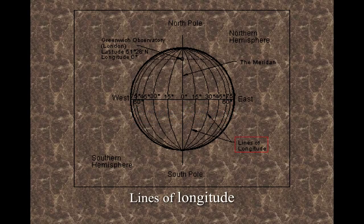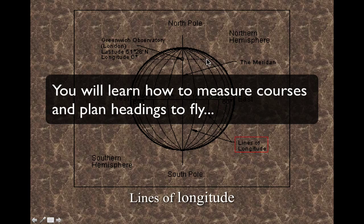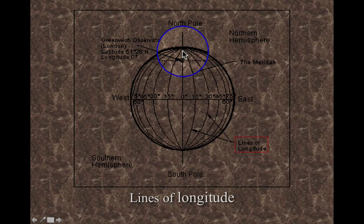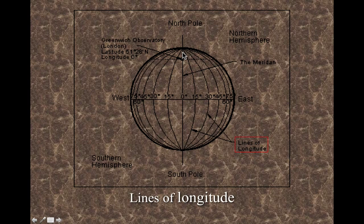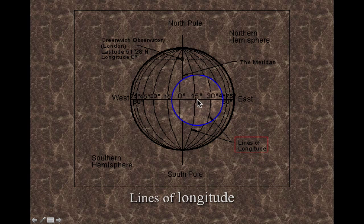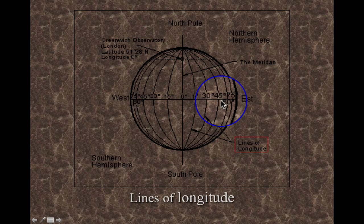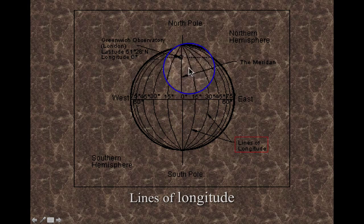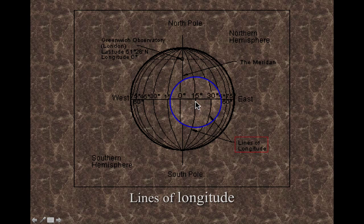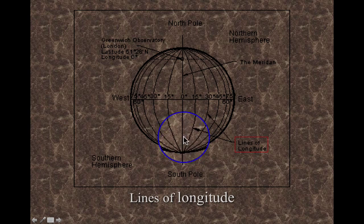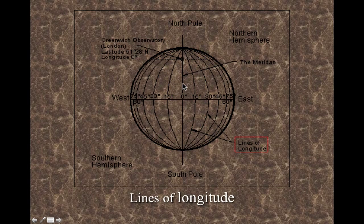No matter what kind of plotter you have, you're going to reference your course heading to true north — that is the north pole of the earth. On the sectional charts, there are lines of longitude, and we can line up with any one of those lines. They all lead to the north pole. It really doesn't matter where we are on the earth — 15, 30, or 45 degrees — because the earth is curved, so any line of longitude viewed straight on appears as a straight line from the north pole to the south pole. These lines provide a reference to find our heading.